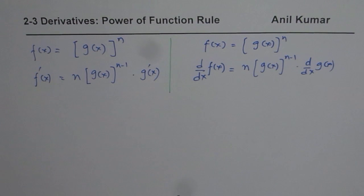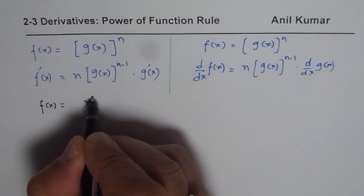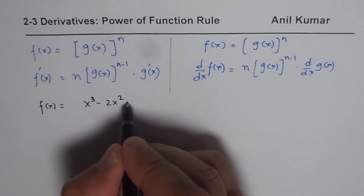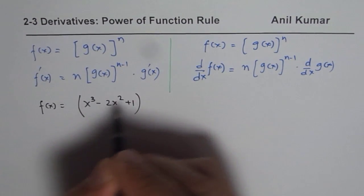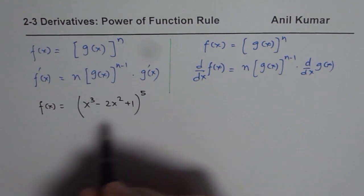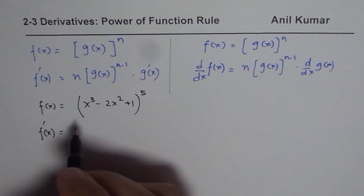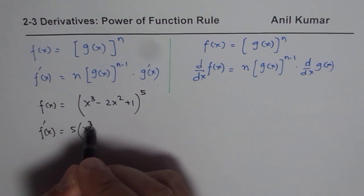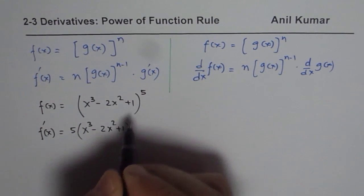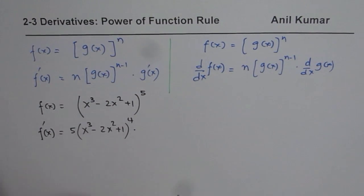So that is the power rule which we are going to discuss in this video. Let us take up two examples. One of them is f of x equals to x cubed minus 2x squared plus 1, to the power of 5. We have a function here whose exponent is 5, so the derivative f'(x) will be 5 times the function x cubed minus 2x squared plus 1, to the power of 5 minus 1, which is 4, times the derivative of the inside function.